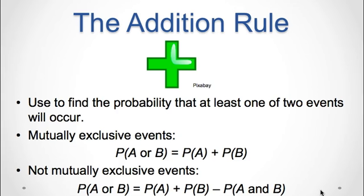Now let's explore the addition rule for mutually exclusive events. Remember that mutually exclusive events are when two events cannot happen at the same time. If A and B are mutually exclusive events, then the probability of A or B is equal to the probability of A plus the probability of B, minus the probability of A and B. However, with mutually exclusive events, the probability of A and B is always equal to zero, so the addition rule simplifies to: P(A or B) = P(A) + P(B).